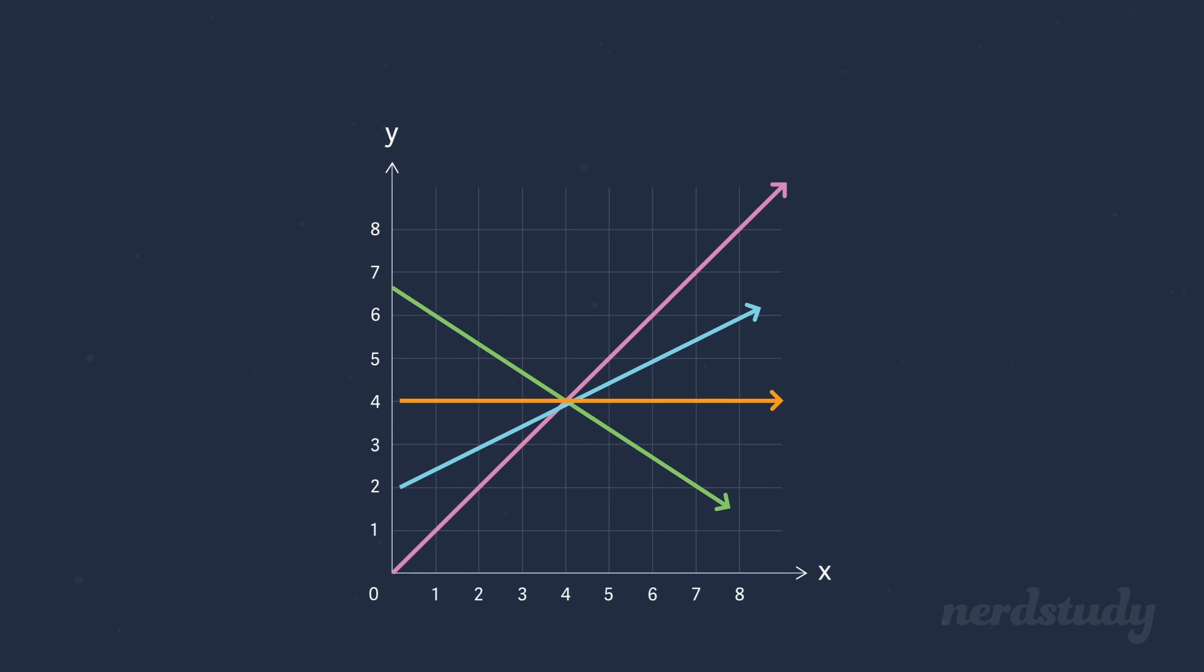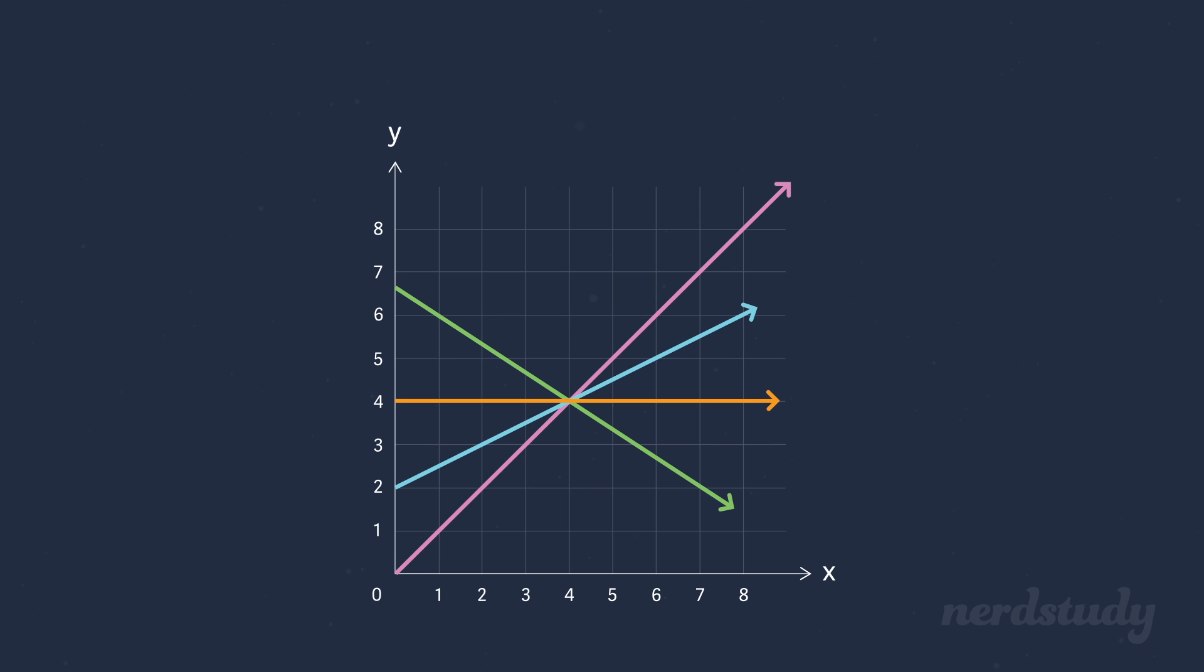But, to say that the linear systems are equivalent would be completely fine, since it is referring to the idea that the two sets of lines are sharing the same point of intersection as their solutions.